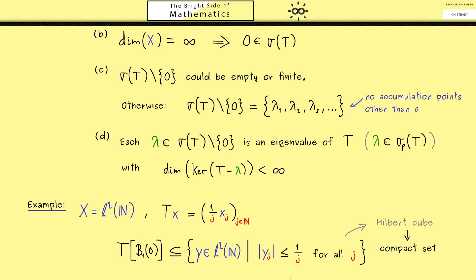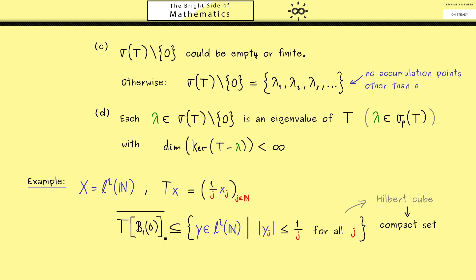However this means the right hand side is a closed set and therefore if we form the closure of the left hand side it's still contained in the right hand side. And from this we now can conclude that the operator T here is a compact operator.